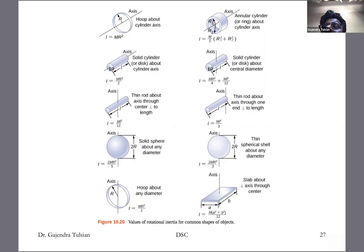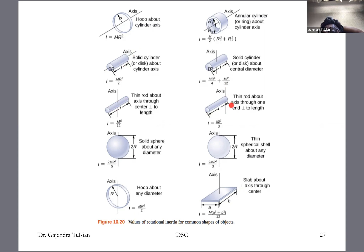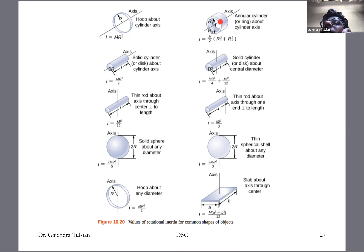From tables: for a thin rod, the moment of inertia about a central axis is (1/12)ML². For a rod rotating about its end, the moment of inertia is (1/3)ML² — four times greater. For a sphere, such as the Earth, the moment of inertia about its axis is (2/5)MR². For a ring it's (M/2)(R₁² + R₂²).